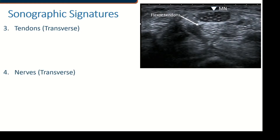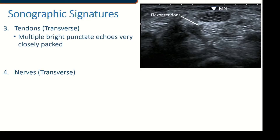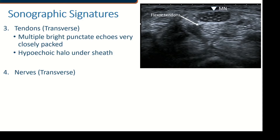Looking at tendons and nerves in transverse: tendons will display as multiple bright punctate echoes very close together. You can really appreciate, with the median nerve above it, how much brighter the tendon is. You will sometimes see a hypoechoic halo around the tendon sheath — that's quite common and is another telltale sign. That halo is just some loose areolar tissue between the tendon sheath and the tendon fibers themselves.